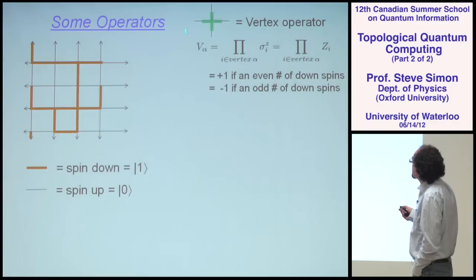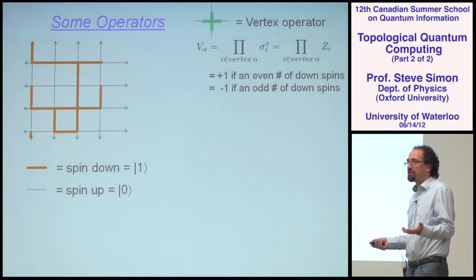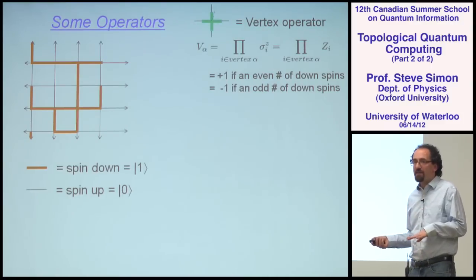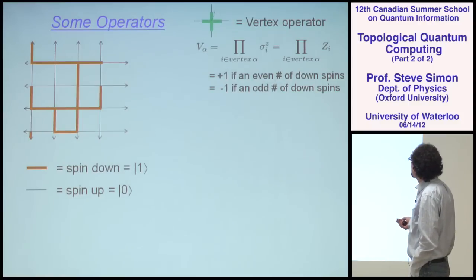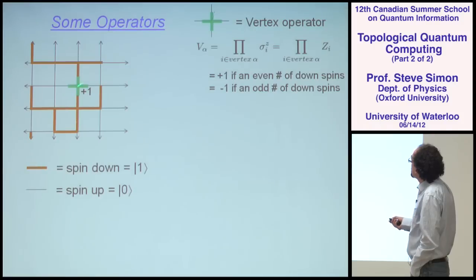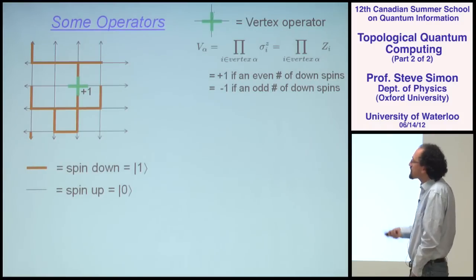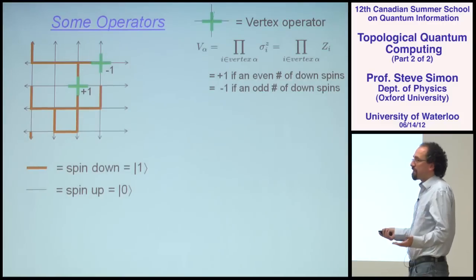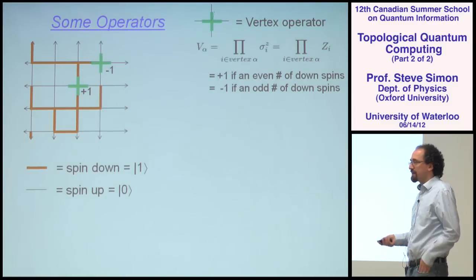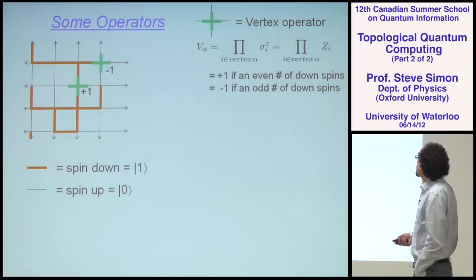The property of this operator is that if there's an even number of down spins coming into a vertex, it takes the eigenvalue plus one; and if there's an odd number of down spins coming into that vertex, it has an eigenvalue of minus one. So in this particular state of the system, if I apply the vertex operator here, there's an even number of red bonds coming in, so it's a plus one eigenstate. Whereas if I apply the vertex operator here, it's a minus one eigenstate because there's one red bond coming in.